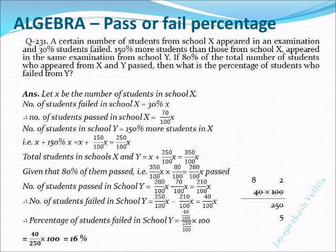Next, given that there are 150% more students than from school X appeared in the examination from school Y. So in school Y there are students which are 150% more than students in X. Therefore number of students in Y equals X plus 150/100 of X, which equals 250% of X. Therefore number of students in Y is equal to 250% of X.